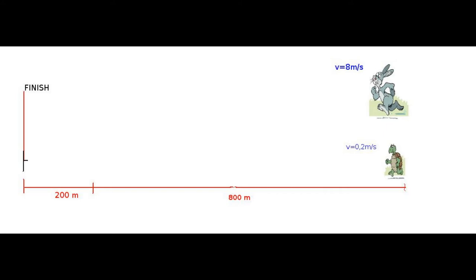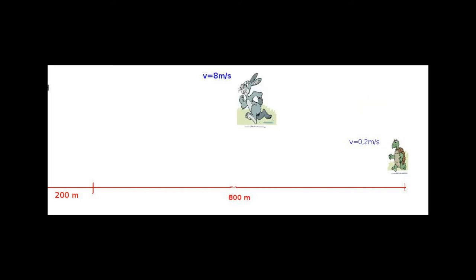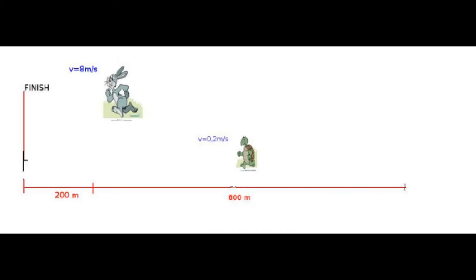The tortoise crawls at a speed of 0.200 meters per second toward the finish line. The hare runs at a speed of 8.00 meters per second toward the finish line for 0.800 kilometers and then stops to tease the slow-moving tortoise as the tortoise eventually passes by.